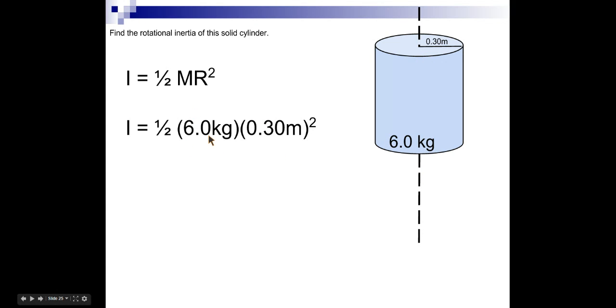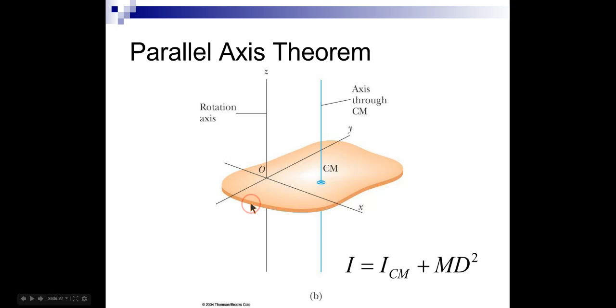The mass is 6 kilograms. R is its radius. So 6 kilograms, 1.5 times 6 kilograms times 0.3 squared. That gives us 0.81 kilogram meter squared. And that's it.